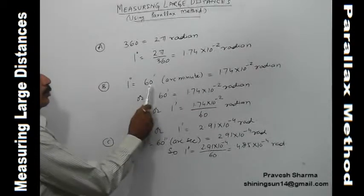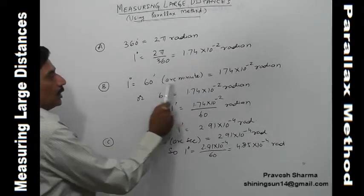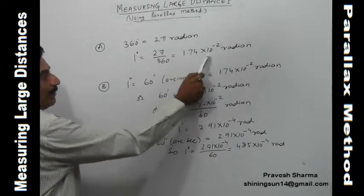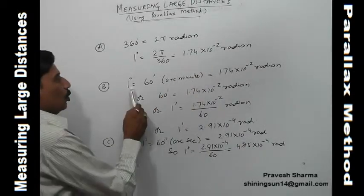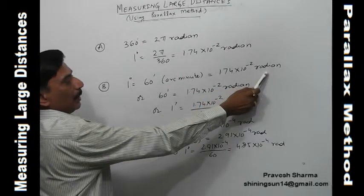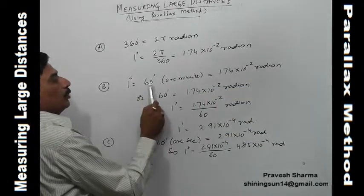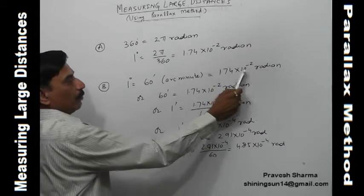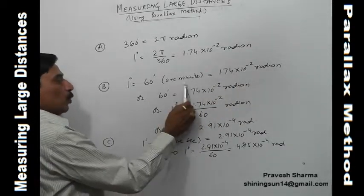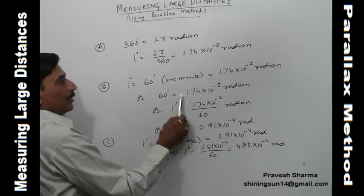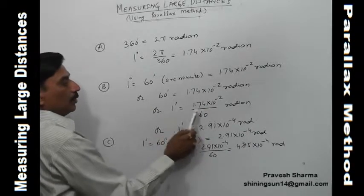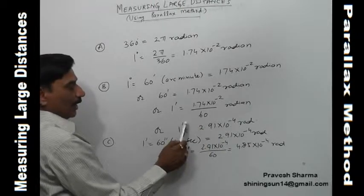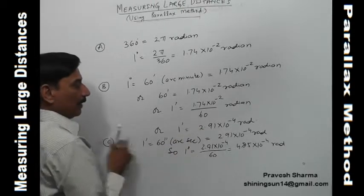Since 1 degree equals 60 arc minutes, and 1 degree equals 1.74 × 10⁻² radians, we get 60 arc minutes equals 1.74 × 10⁻² radians. Therefore, 1 arc minute equals 2.91 × 10⁻⁴ radians. You should remember this conversion.